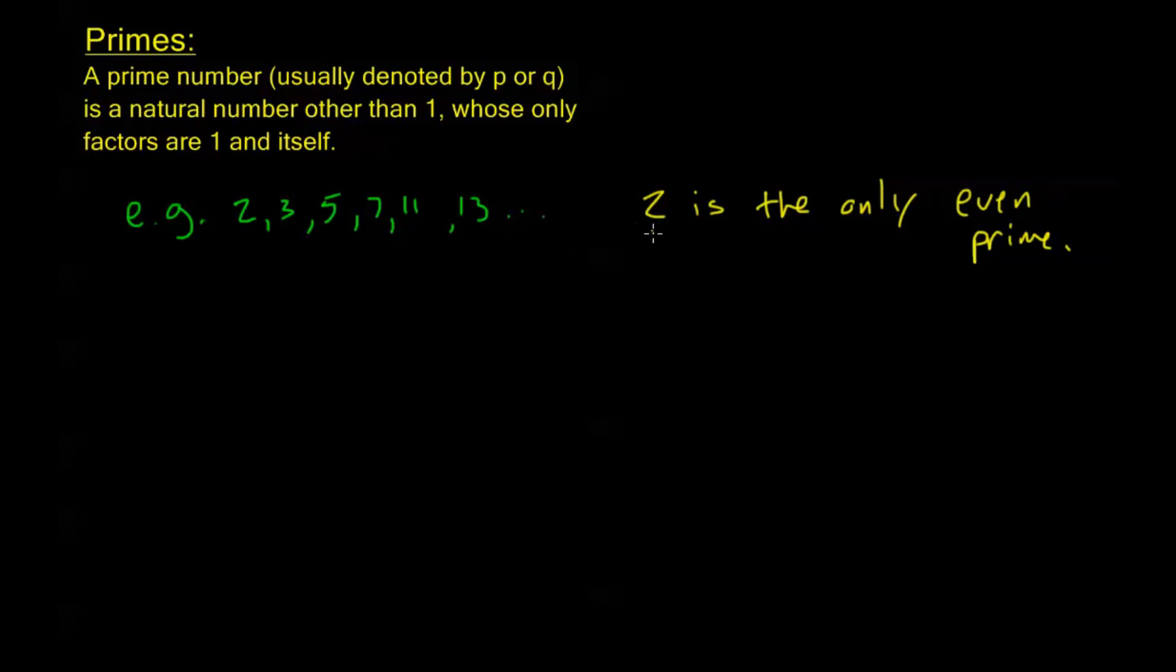If we had some other even number, it's obviously not going to be prime because 2 always divides even numbers. So 2 is always going to be a factor of any even number, so any even number other than 2 couldn't possibly be prime.